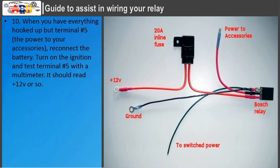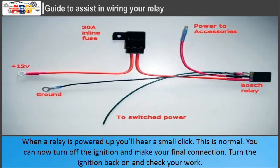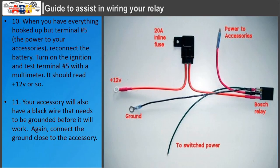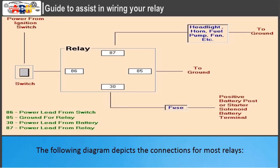Step 10: When you have everything hooked up except terminal number 5, reconnect the battery. Turn on the ignition and test terminal number 5 with a multimeter — it should read plus 12 volts or so. When the relay is powered up you'll hear a small click; this is normal. You can now turn off the ignition and make your final connection to terminal 5. Turn the ignition back on and check your work. Your accessory will also have a black wire that needs to be grounded before it will work — connect the ground close to the accessory. The following diagram depicts the connections for most relays.